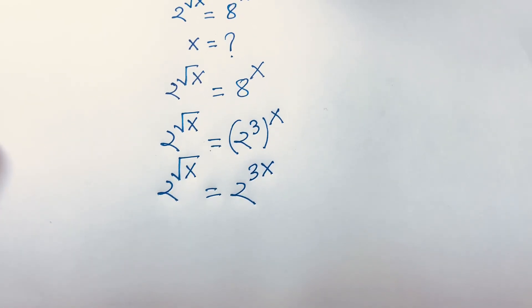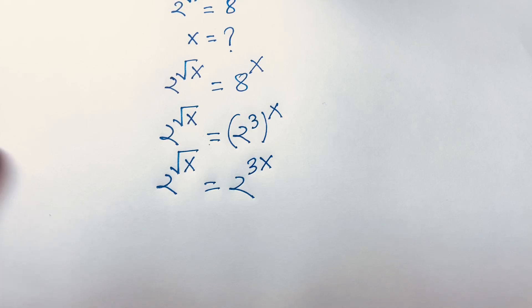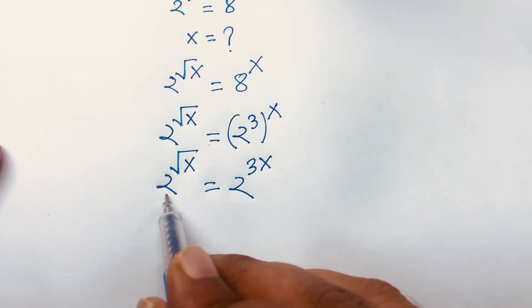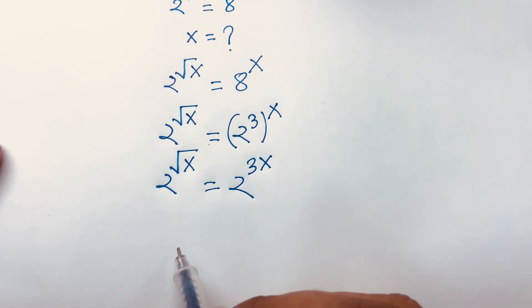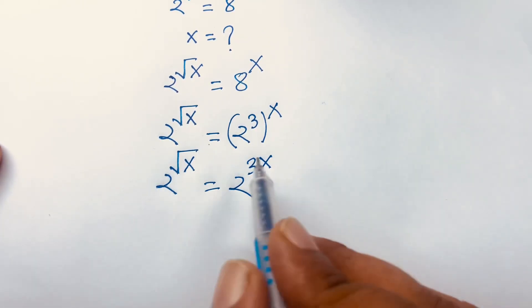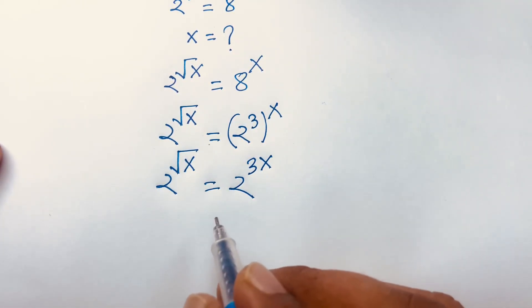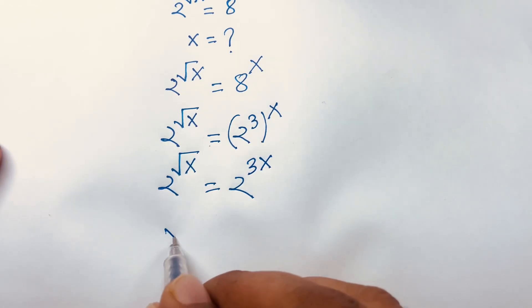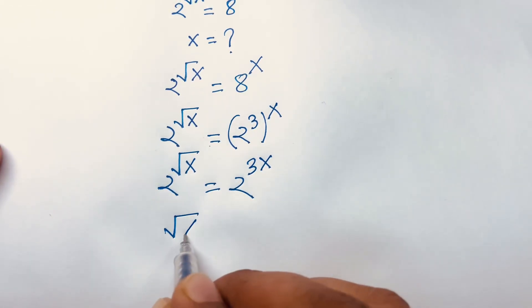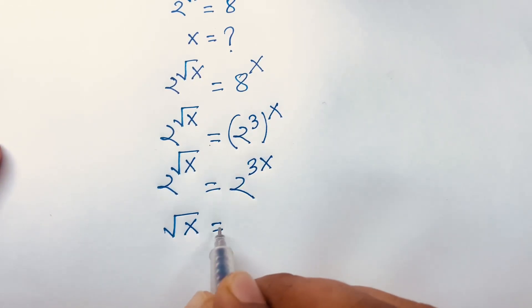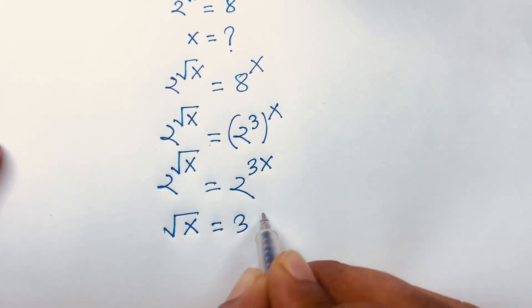According to exponential rules, since the base is the same on both sides, the exponents are equal. So it will be: square root x is equal to 3x.